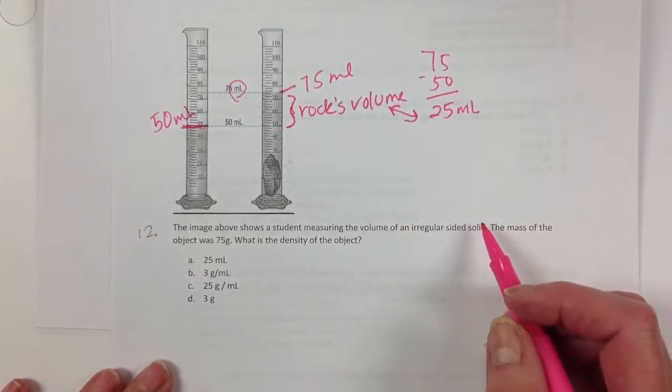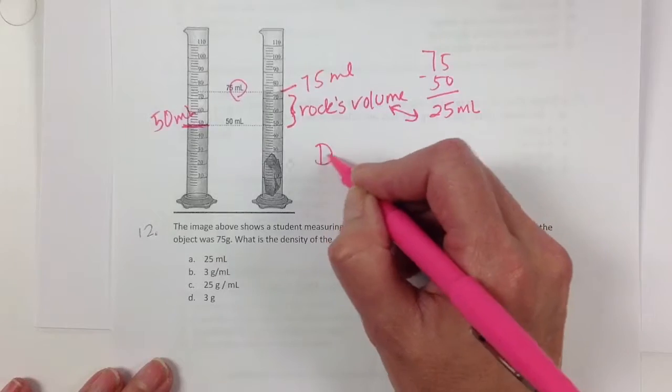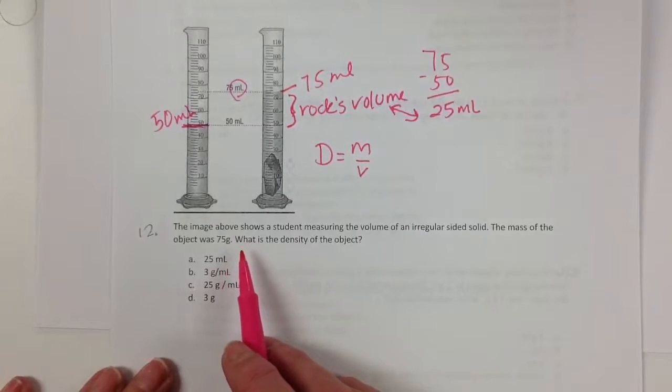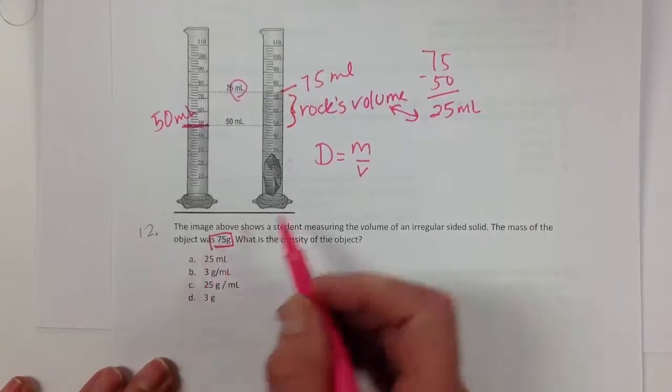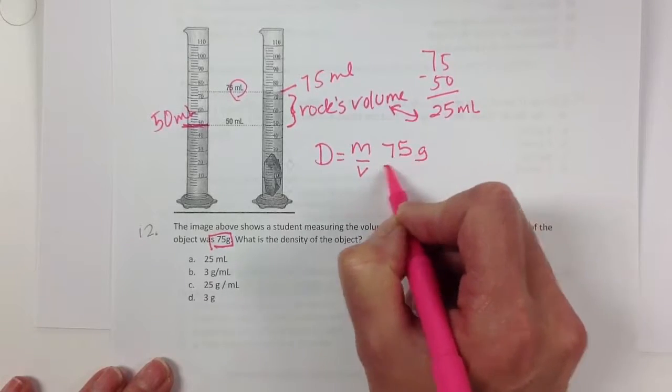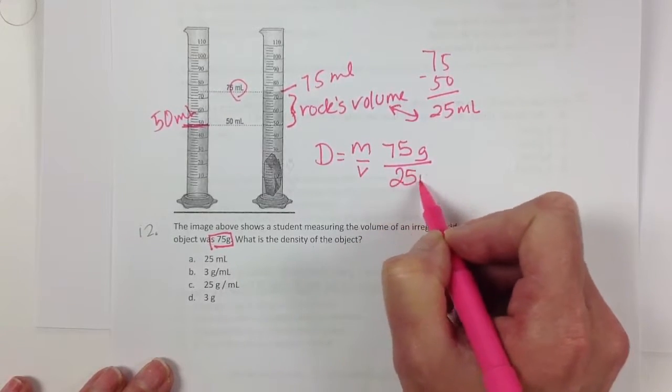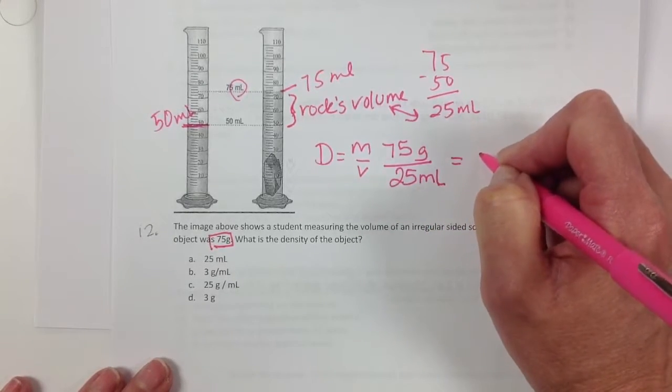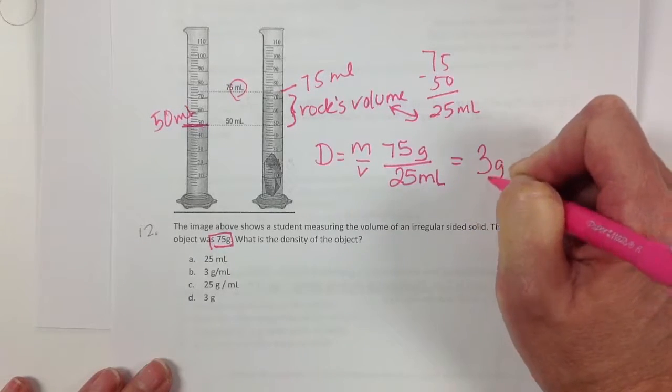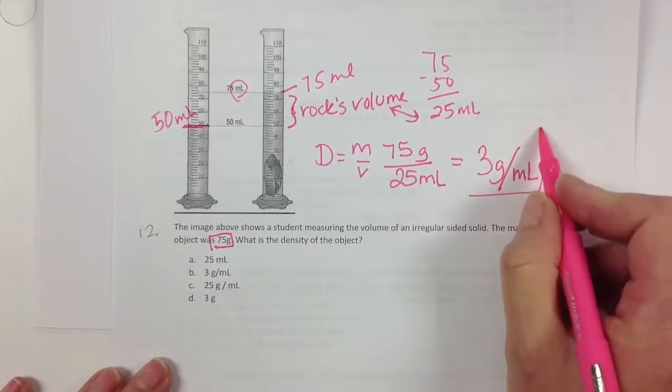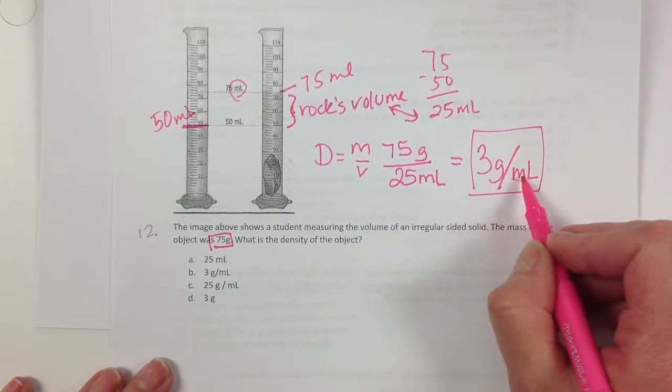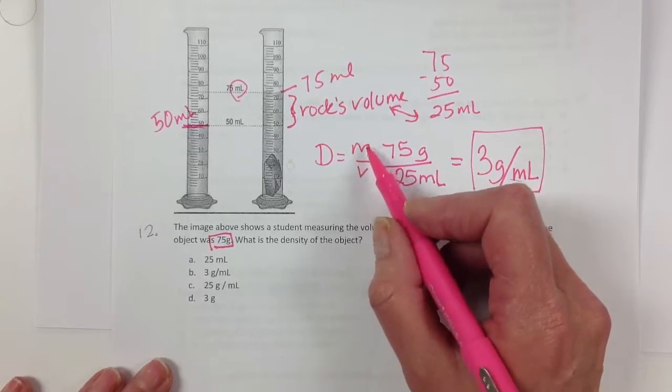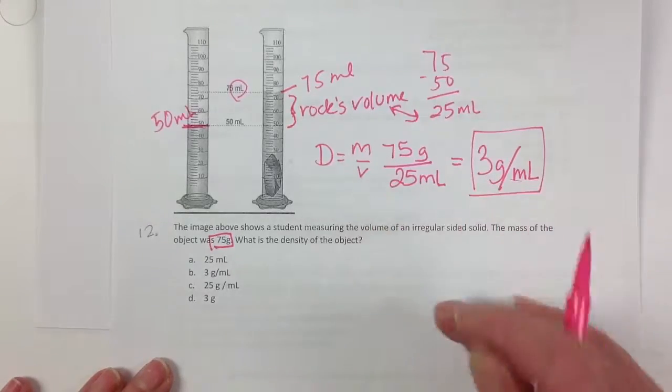Now we're not done yet when it comes to density. That's just the volume. Remember density is equal to mass divided by volume. So we still need the mass. Here it tells us that the mass of the object was 75 grams. So if the mass of the object is 75 grams and the volume is 25 milliliters, then we know that the density is going to be 3 grams per milliliter. Remember density is always going to have two units involved as an answer because it has two measurements involved in the problem, in the process.